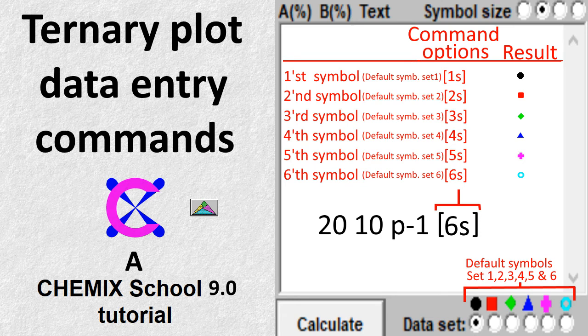This Chemex School tutorial is about how to alter properties such as size, color, angle, and shape of symbols and text using available ternary data entry command options.